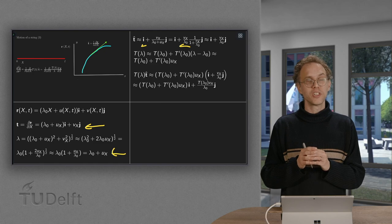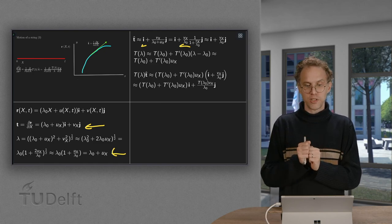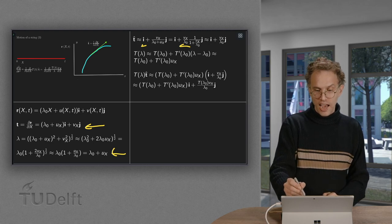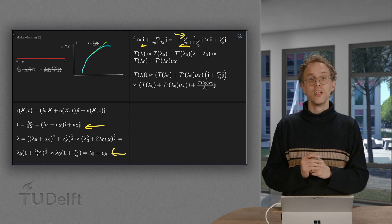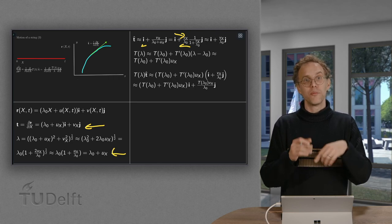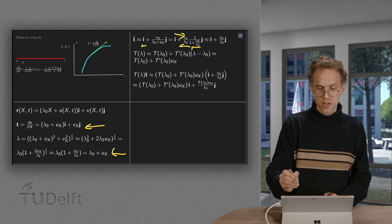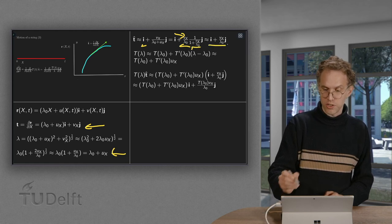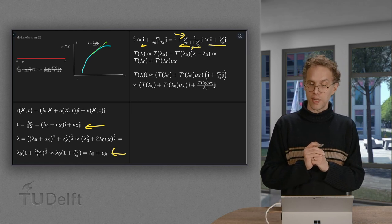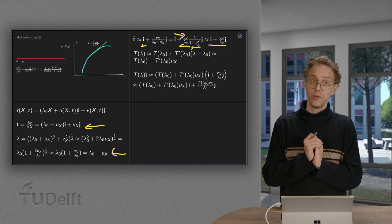We can use for example a geometric series. 1 over 1 plus something small equals 1 minus something small. But we already have something small over here. So the something small which would remain there will become quadratic. So we basically can replace it by a 1. So our unit tangent equals i plus vx over lambda 0 times j. So that's the linearization of our unit tangent.